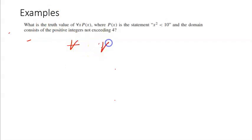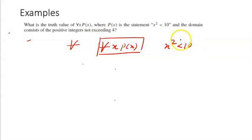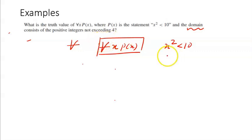We tried understanding what 'for all x, p(x)' represents. Let us take the first example: what is the truth value of the statement 'for all x, p(x)' where the statement is x² < 10? For every such statement, we need a clear idea of the domain under consideration. Here, the domain is all positive integers not exceeding 4, that is {1, 2, 3, 4}.